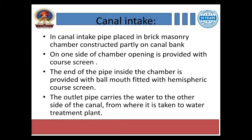In the canal intake, a pipe is placed in brick masonry chambers constructed partially on the bank. On one side of the chamber, an opening is provided with a coarse screen. The end of the pipe inside the chamber is provided with a bell mouth fitted with a hemispherical coarse screen. The outlet pipe carries the water to the other side of the canal, from where it is taken to the water treatment plant.